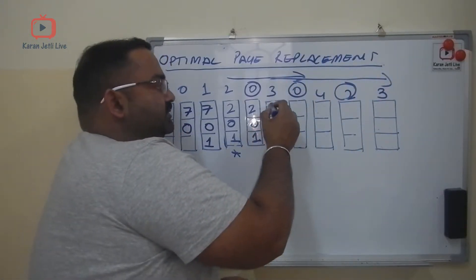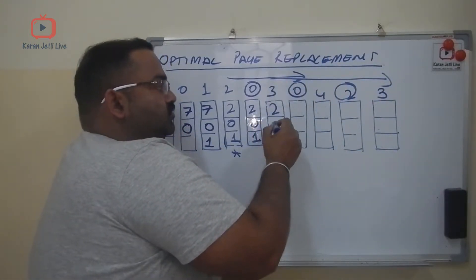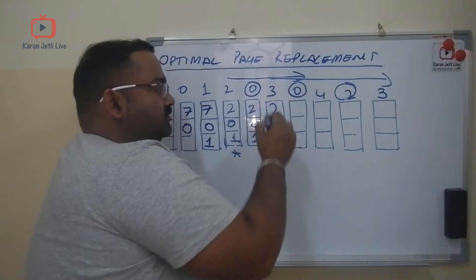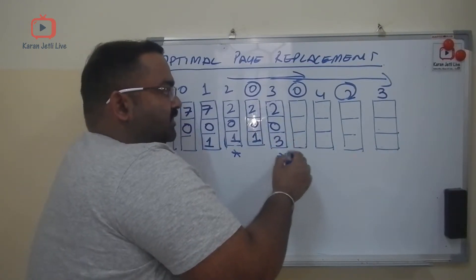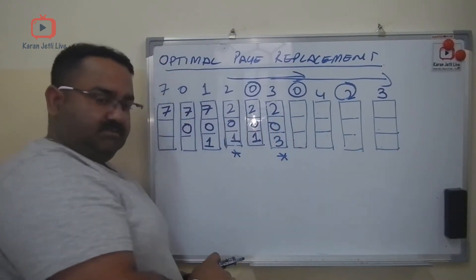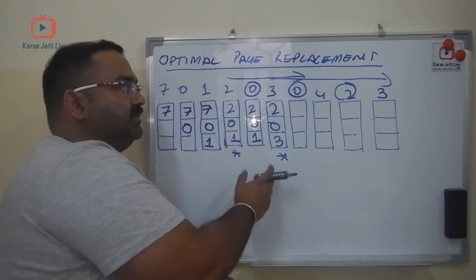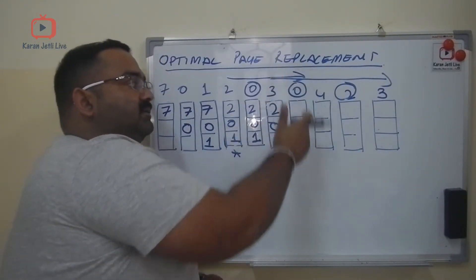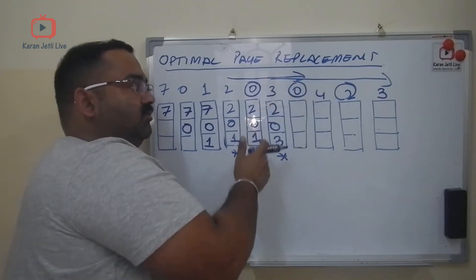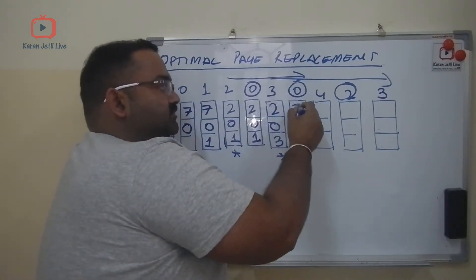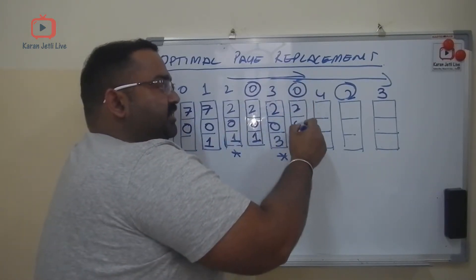So the cache becomes: 2, 0, 3. Then we have zero already there, so no replacement is needed.